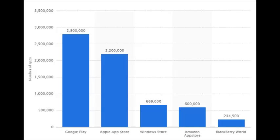The first thing to consider when comparing any two stores is the number of apps available. You can have the best user experience in the world, but it's no good if you can't download the content you want. The Google Play Store is the clear winner. Estimates suggest the number of apps in the Amazon App Store hovers around 600,000. In comparison, the Google Store has nearly 3 million potential downloads.